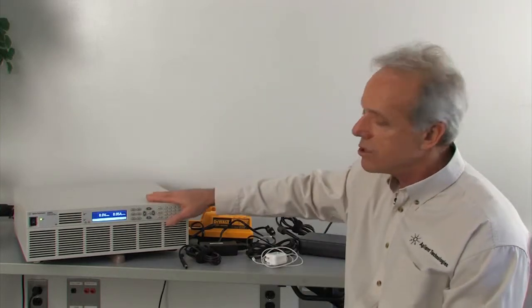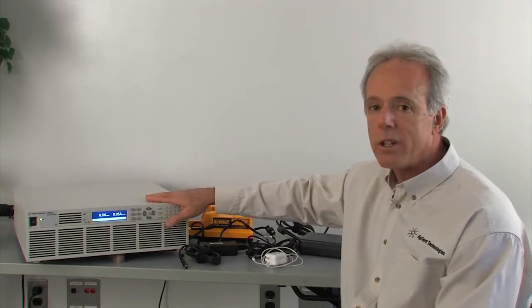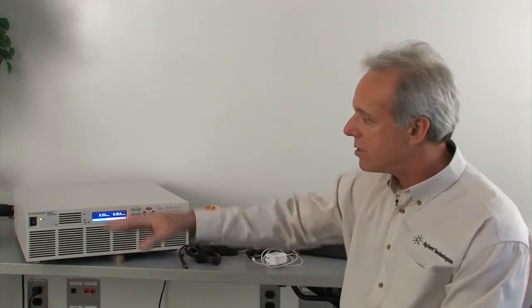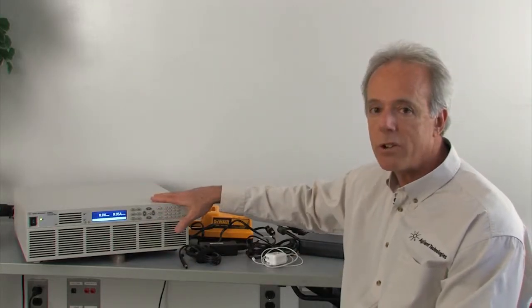Now that's where the AC source comes in handy to test the adapters. The output of the AC source can be set anywhere between zero volts all the way up to 270 volts, and at frequencies from 40 hertz to 500 hertz. So we can easily accommodate with these AC 6800 AC sources all of the various input voltages and frequencies that power adapters use.